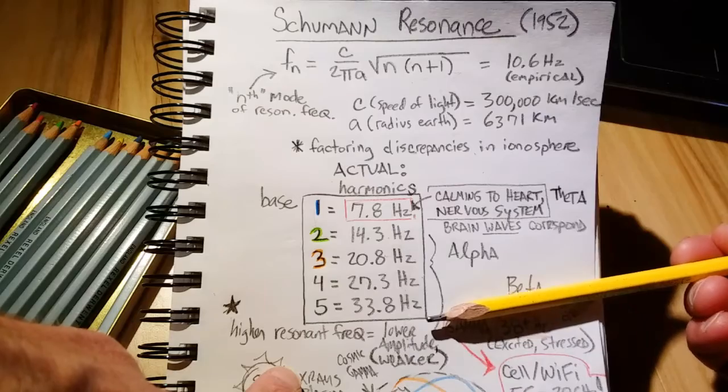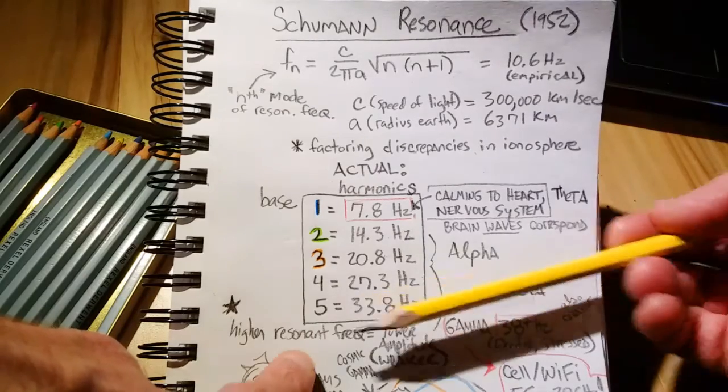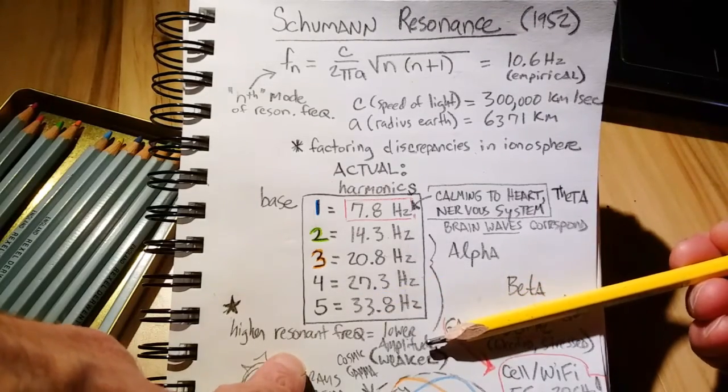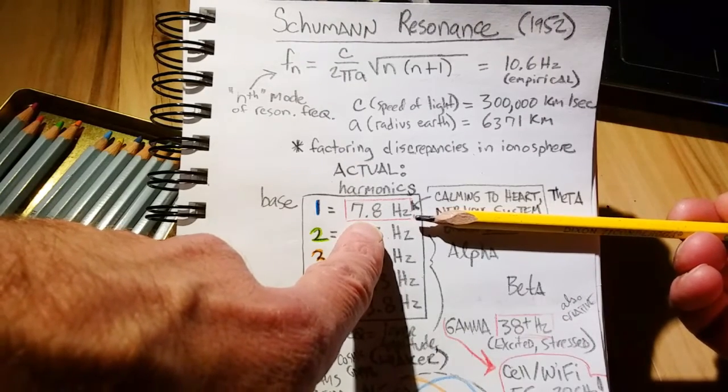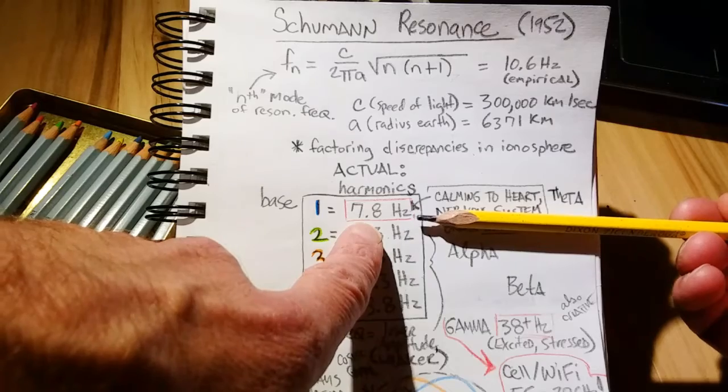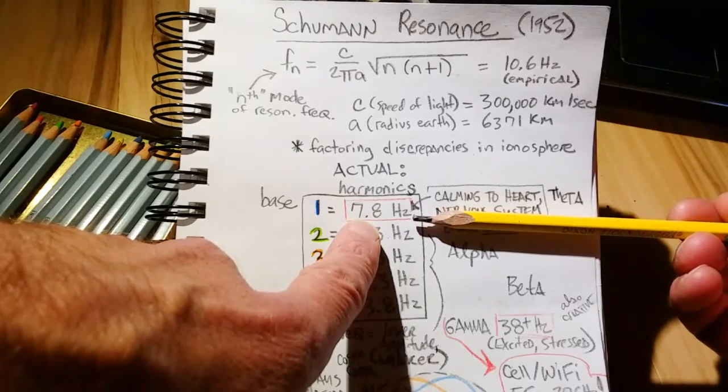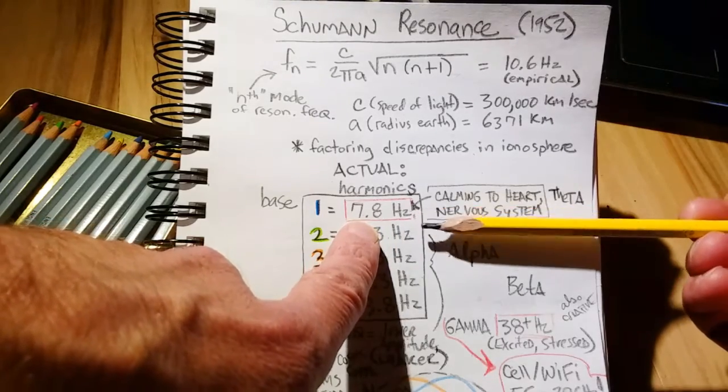These frequencies continue down as we progress in frequency. The higher the frequency, folks, the lower the amplitude or intensity, with the base frequency, 7.8, being far the dominant frequency of planet Earth.